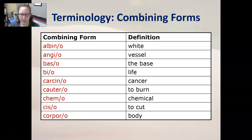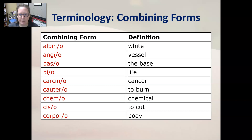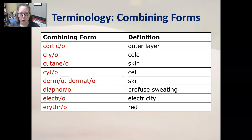Let's go through the combining forms. Albino is white, angio is vessel like blood vessel, vaso is the base, bio is life, carcino is cancer, cautero is to burn — think cauterize — chemo is chemical, ciso is to cut like scissors, corporo is body — think corporate — cortico is the outer layer, cryo is cold, cutaneo is skin.